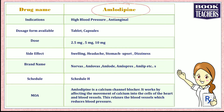Amlodipine is available in two dosage forms: tablets and capsules. The dose ranges between 2.5 mg to 10 mg per day, depending on the severity of the cardiovascular disease.